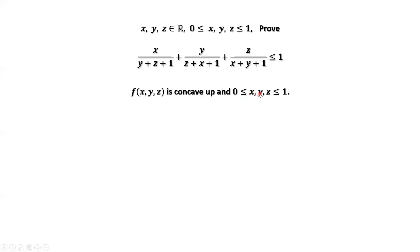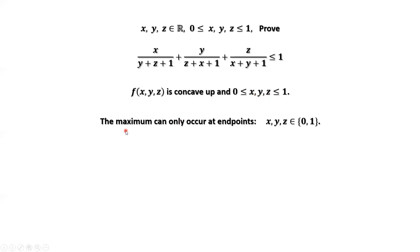From the given domain, x, y, z are between zero and one. From the optimization result, the maximum of f can only occur at endpoint values. This means x, y, z only take values of zero and one.